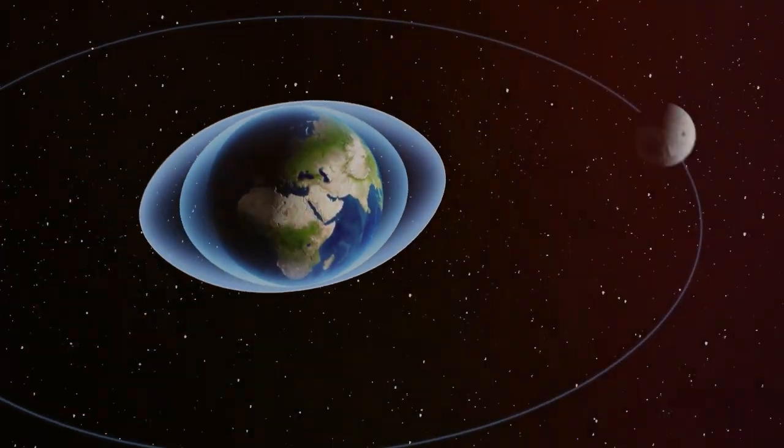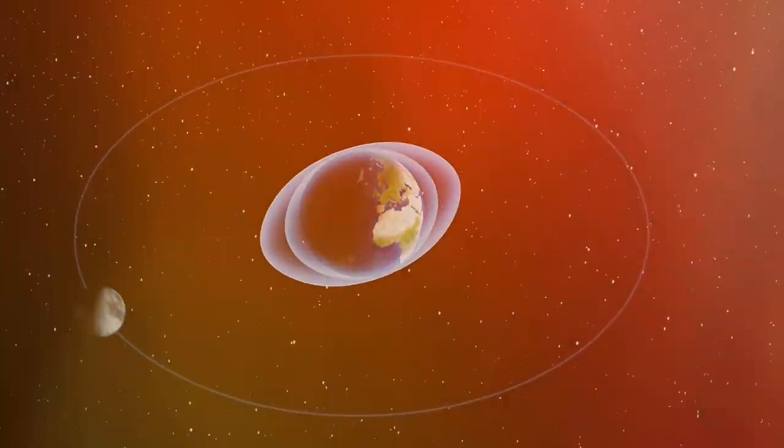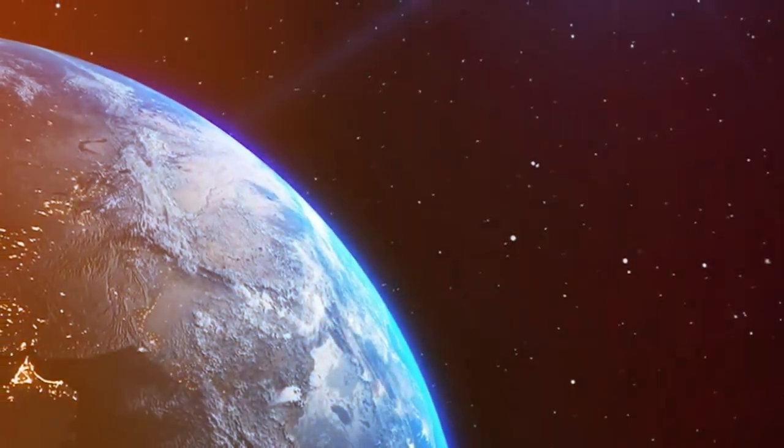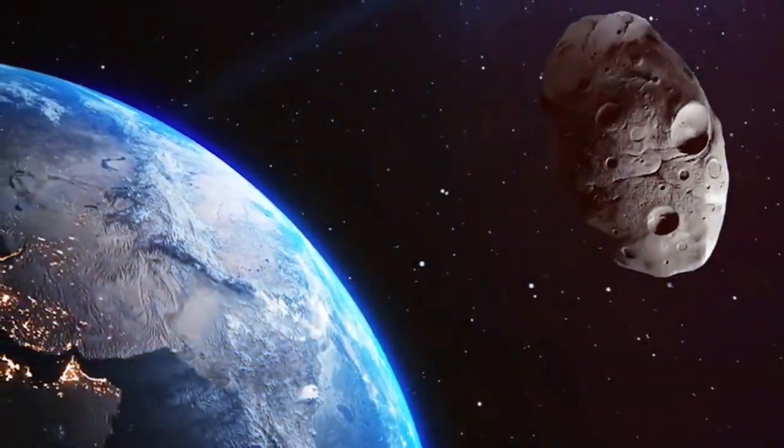Mini moon events come in two flavors, de la Fuente Marcos said. Long episodes involve asteroids referred to as temporarily captured orbiters, which complete one or more revolutions around our planet that can last for one or more years. During short episodes, on the other hand, the asteroid doesn't even complete one full pass around the Earth.